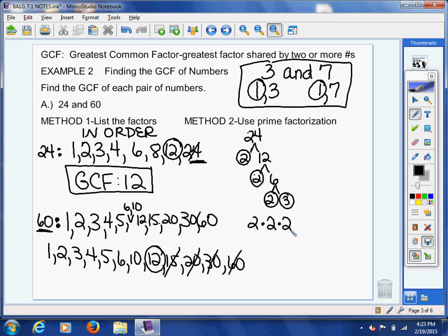And then 60, let's do 2 and 30, 2 and 15, 3 and 5. And so I've got two 2s, a 3 and a 5.